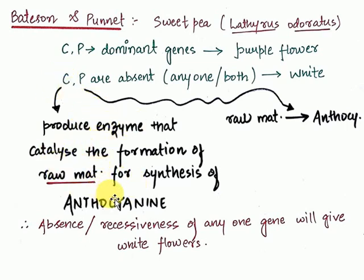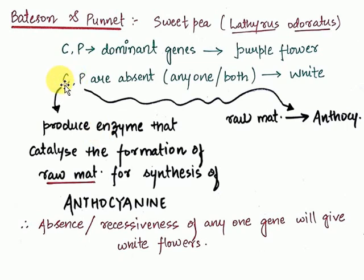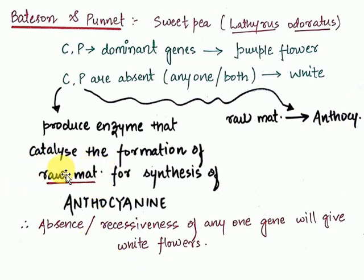The C gene is responsible for the production of an enzyme that catalyzes the formation of raw material for the synthesis of anthocyanin — jo flower mein color provide karta hai. Each gene is a fragment of DNA that forms mRNA by transcription, and that mRNA forms proteins which are enzymes. So the C gene forms an enzyme that produces the raw material for the synthesis of anthocyanin.